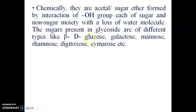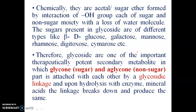There are a variety of sugars that may be attached in a glycoside, including glucose, galactose, mannose, rhamnose, digitoxose, cymarose, and others. Based on this discussion, glycosides can be defined as therapeutically potent secondary metabolites in which glycone and aglycone parts are attached to each other by a glycosidic linkage, and upon hydrolysis with either enzyme or mineral acid, they produce glycone and aglycone moieties.